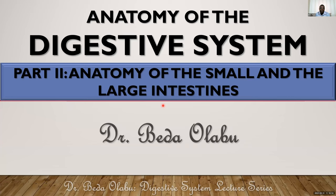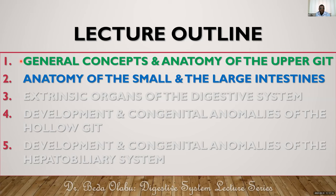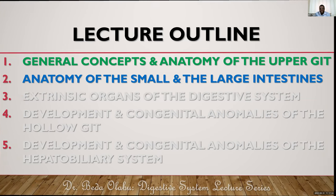Welcome to this second part of the lecture series on the anatomy of the digestive system. In this part we are going to look at anatomy of the small intestine as well as anatomy of the large intestine. In the first part we talked about general concepts regarding digestive system anatomy and looked at anatomy of the upper GI tract — the mouth, pharynx, esophagus, and stomach. There are still other sessions to come covering the accessory organs and development and malformations of the digestive system.